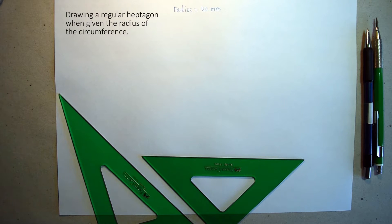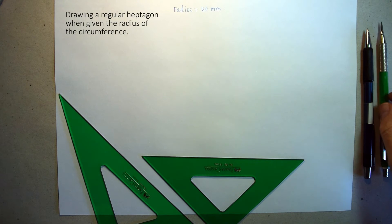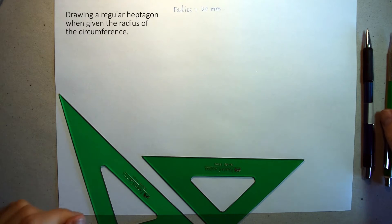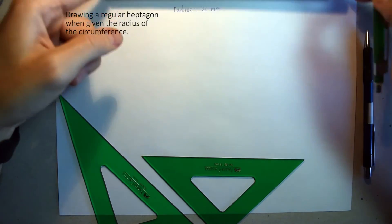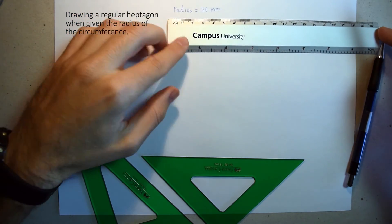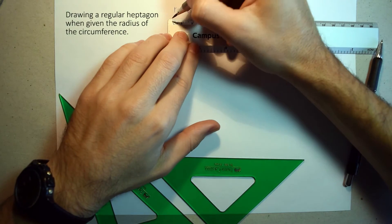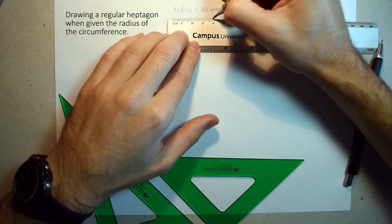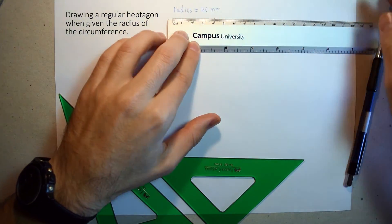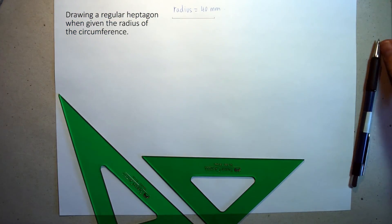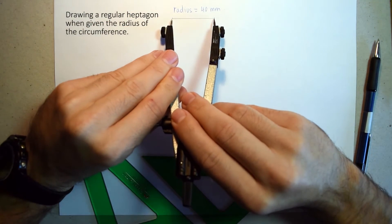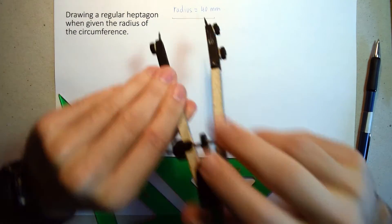Hello, we are going to draw a regular heptagon, which has seven sides. The circumference we need is going to have a radius of 40 millimeters, so we can trace that circumference to start the exercise.